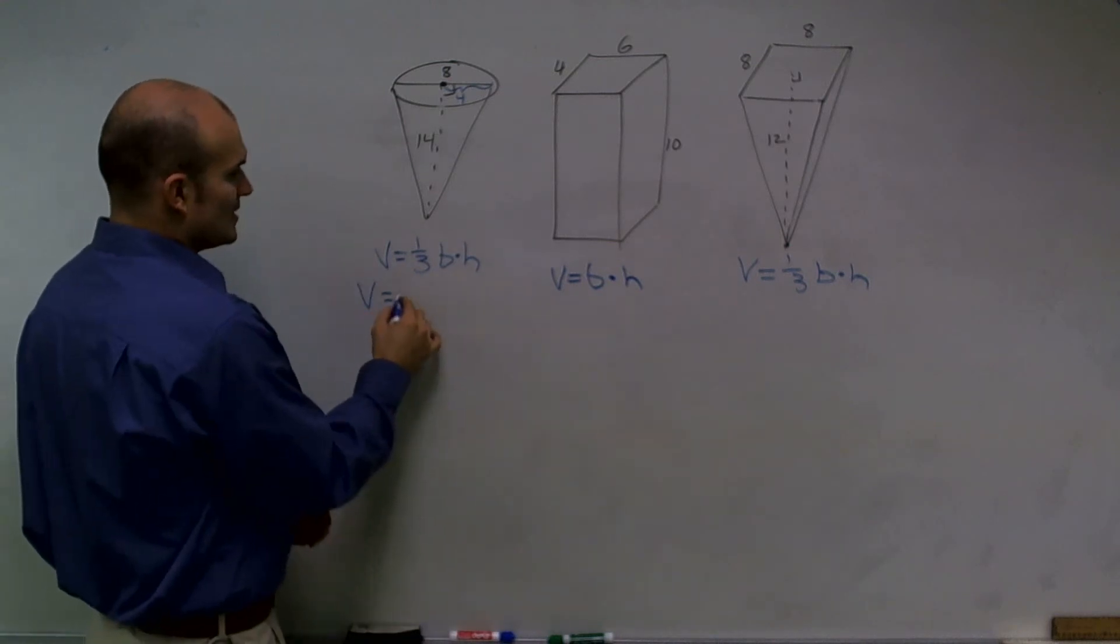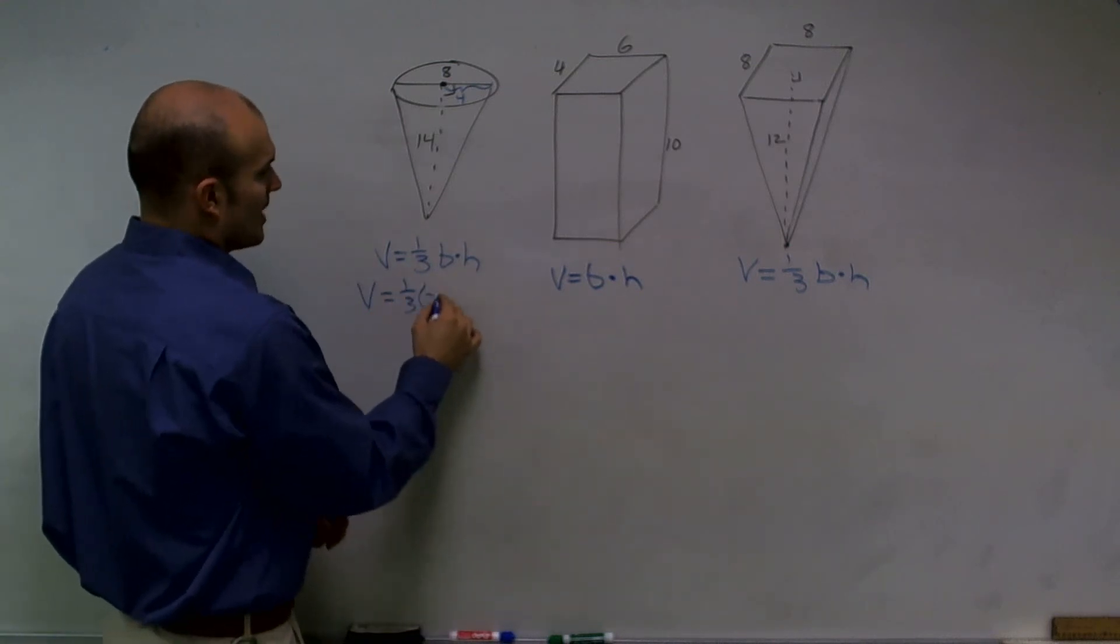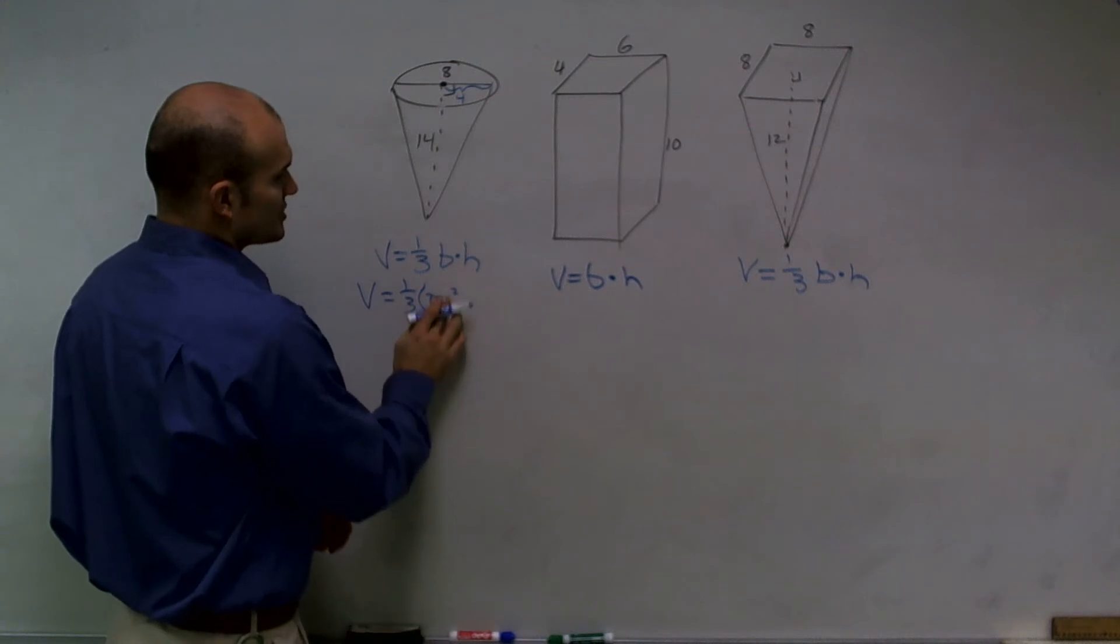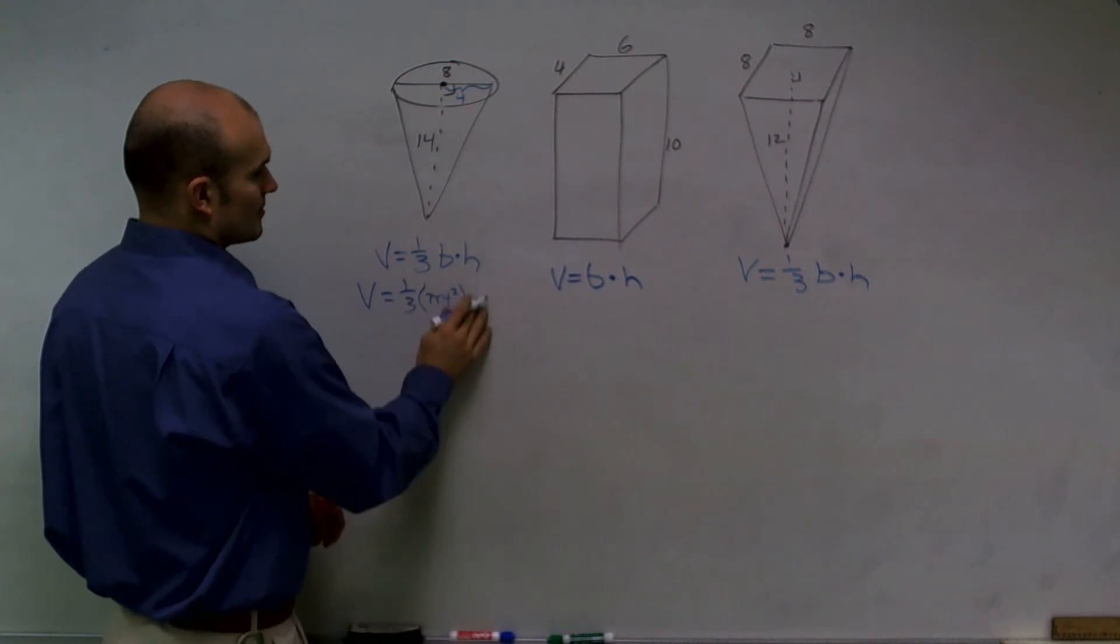To find the area, that's going to equal pi r squared, which is my radius, four squared, times our height, which is going to be fourteen.